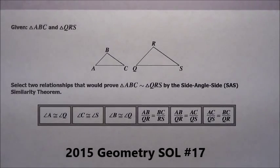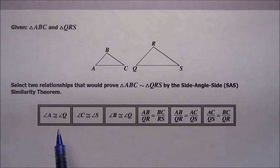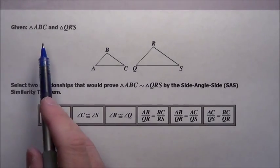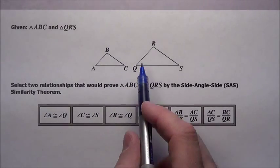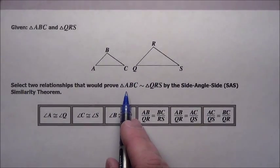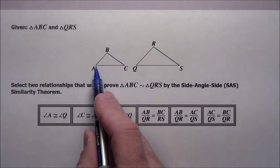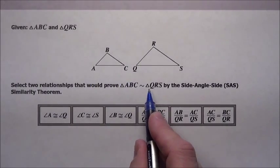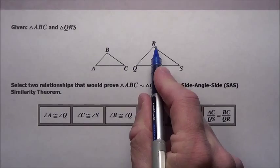Alright, problem 17. It says the directions are click on the correct answers, so we need to pick all that are going to work here. It says given triangle ABC and QRS.